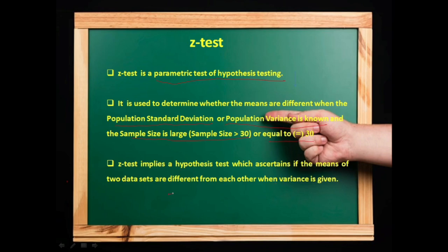Z-test हम कब apply करते हैं, जब sample size 30 से ज्यादा होता है या 30 होता है, और when the standard deviation, population standard deviation और population variance is known. Z-test वो hypothesis test है जो हमें बताता है कि two datasets के means में difference है जब variance या population standard deviation दिया गया है.